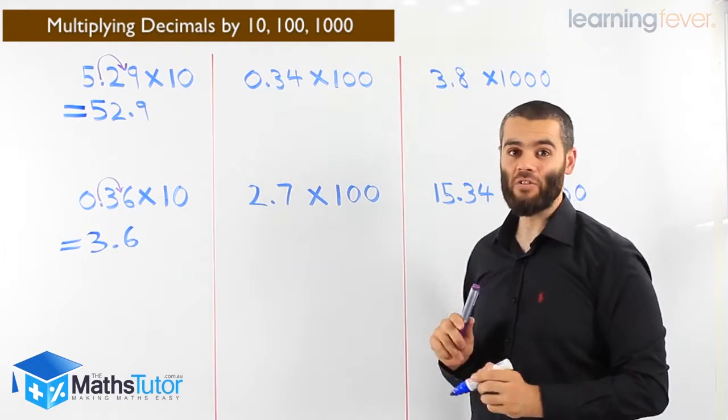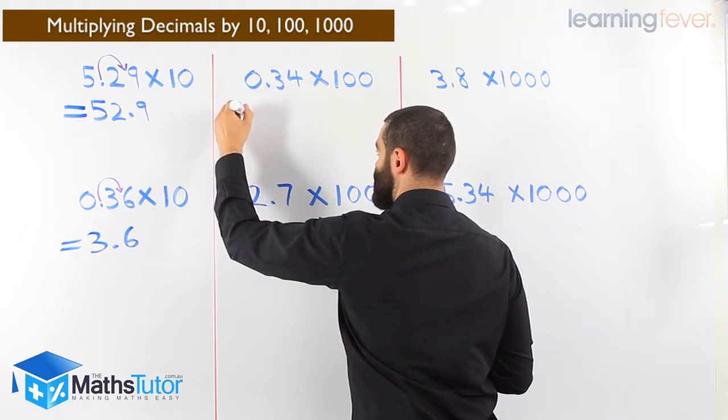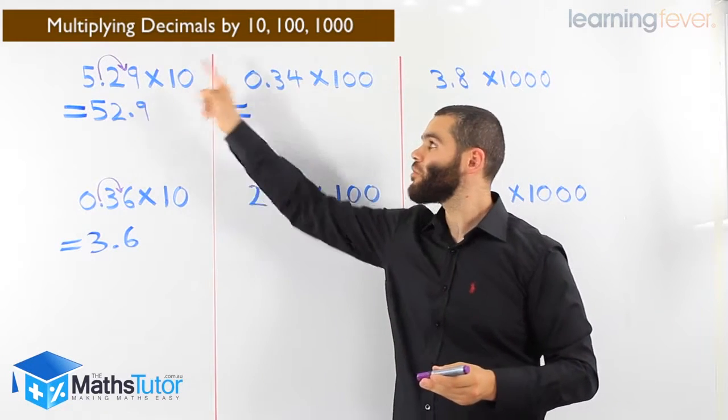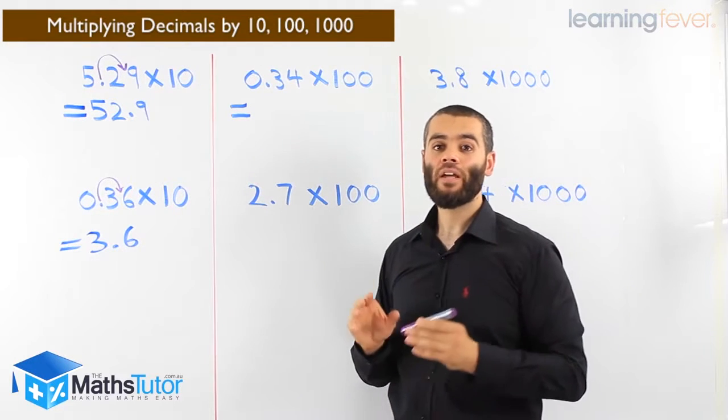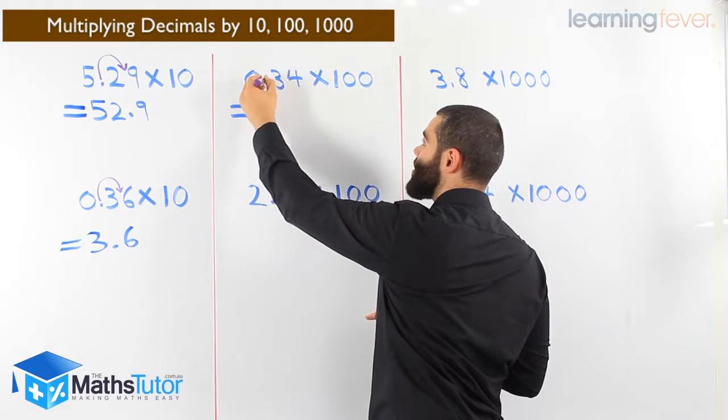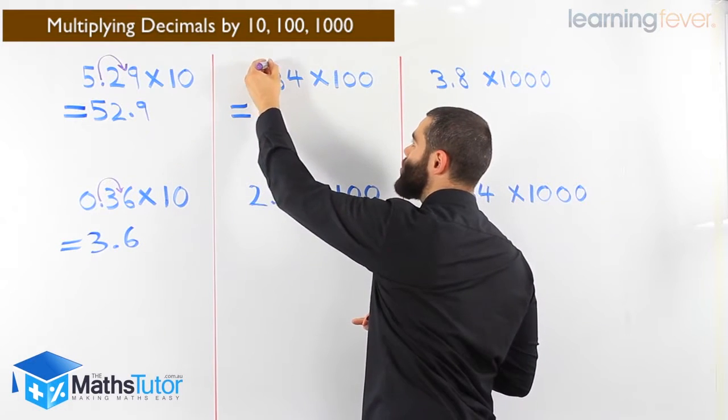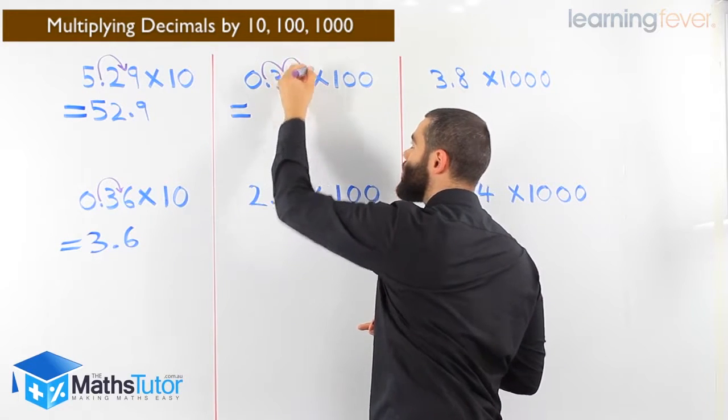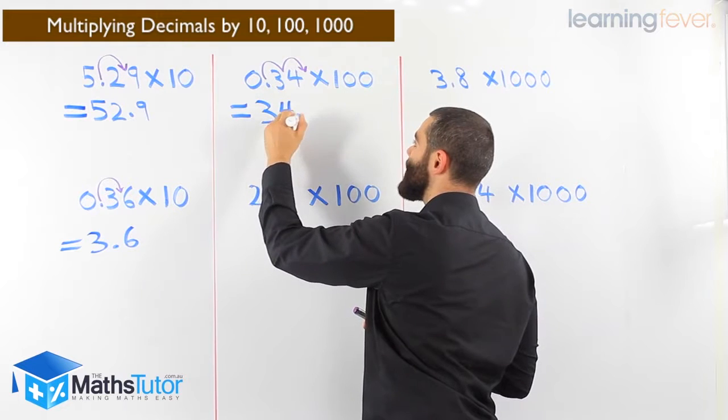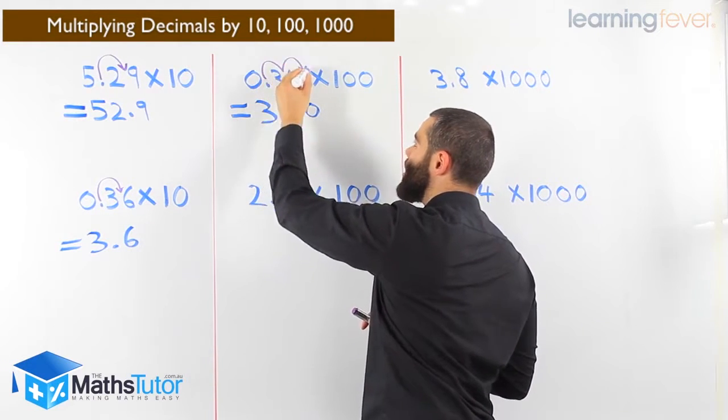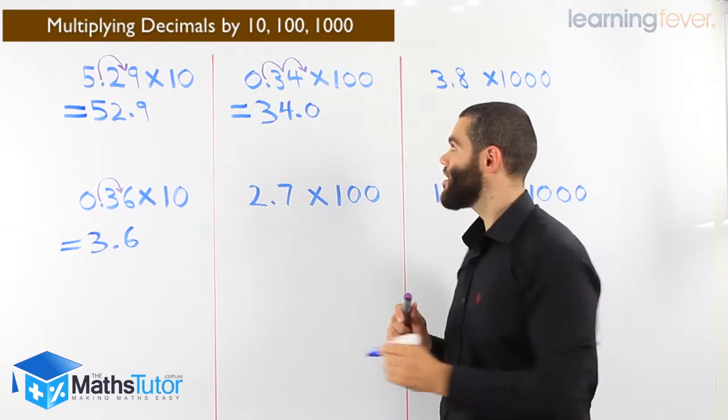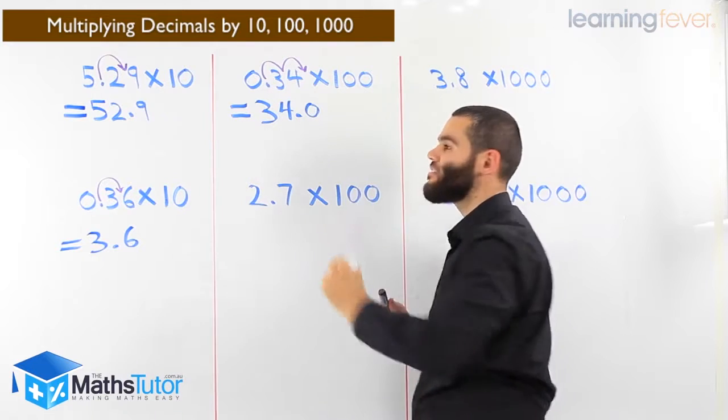0.34 times a hundred. Now, with ten, we had one zero, so we moved once to the right. In this case here, we're multiplying by a hundred. A hundred has two zeros, so we're moving twice to the right. We grab the point and say, you don't belong over here, we're going to move you twice to the right. One, two. Our answer will be 34.0. Move it once, move it twice. All of a sudden, it's after the four - 34.0 or just 34. Both answers are correct. As you can see, we moved it twice because we're multiplying by a hundred, which has two zeros.